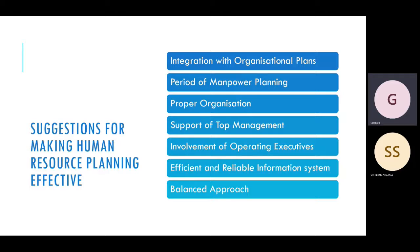The fifth suggestion is involvement of operating executives — if operating executives understand the process and reduce resistance, they will increase participation and coordinate their efforts. The sixth suggestion is an efficient and reliable information system — if you have reliable data about how many persons are available and which jobs need filling, you can make informed decisions about whether to recruit or use existing staff.